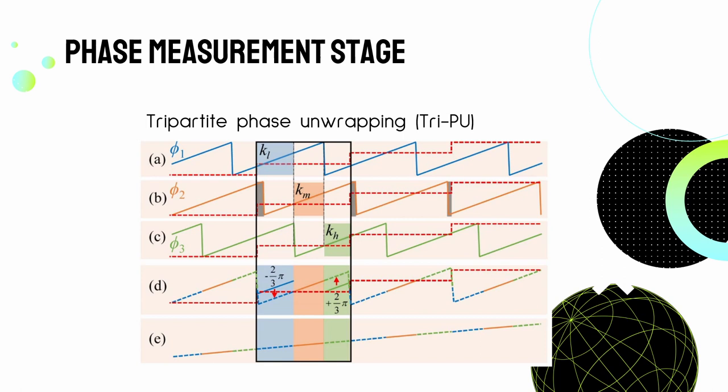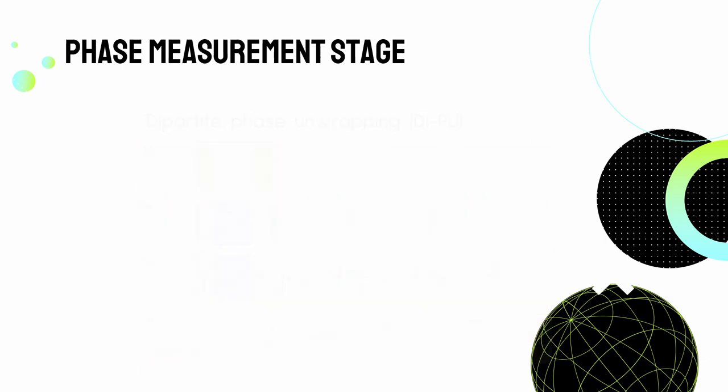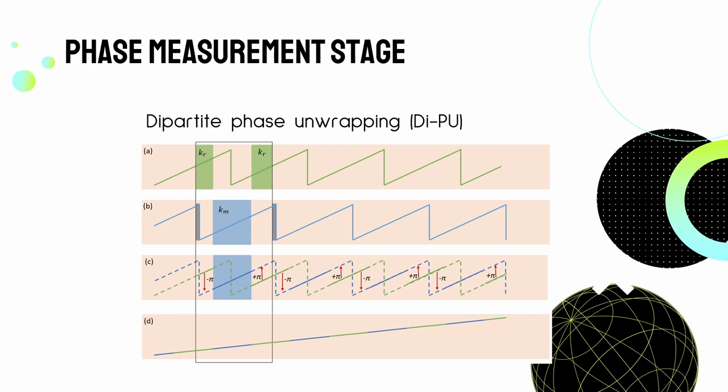However, this method only works well when the mismatch between the wrapped phase and the phase order is no more than a third fringe period, as the phase order K is divided into three parts and used to map to the three wrapped phases. The new phase unwrapping method proposed uses two wrapped phases with a phase difference of π instead of three wrapped phases, hence the named dipartite phase unwrapping or DiPU method. It improves the limitation of one-third fringe period to half-fringe period.